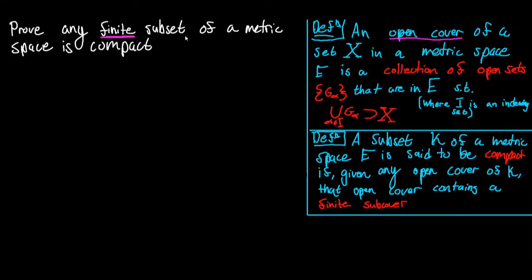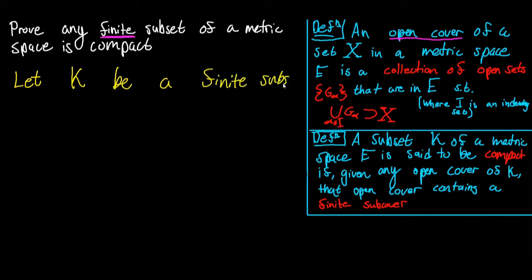Prove any finite subset of a metric space is compact. Let K be a finite subset of some metric space E.